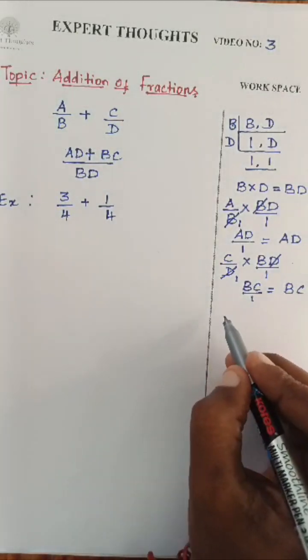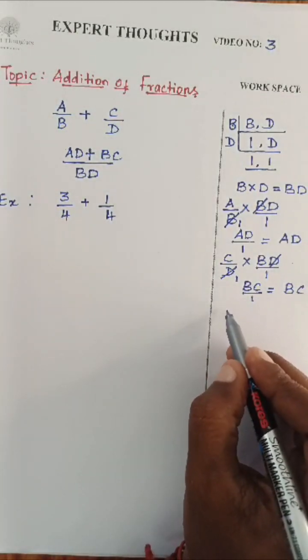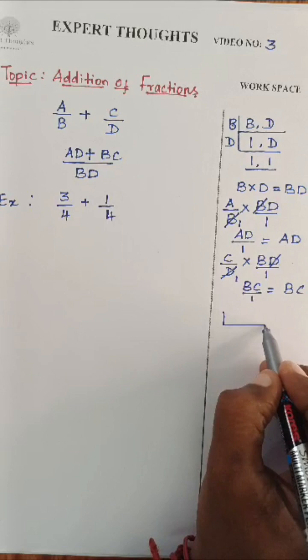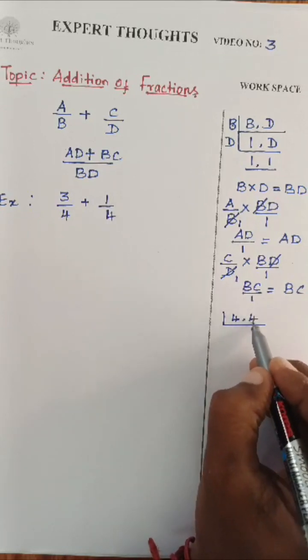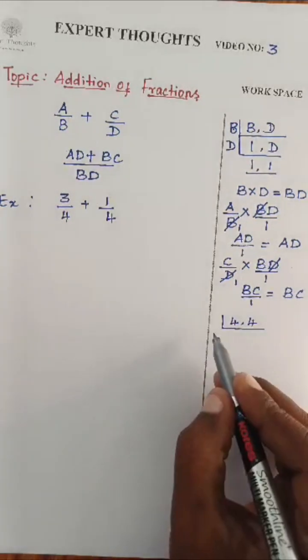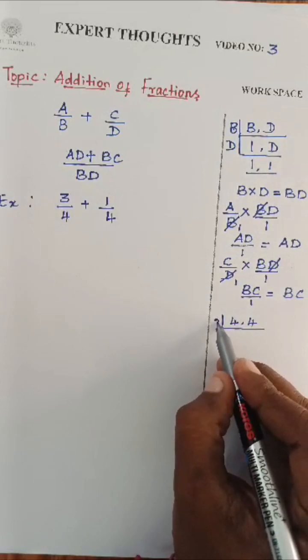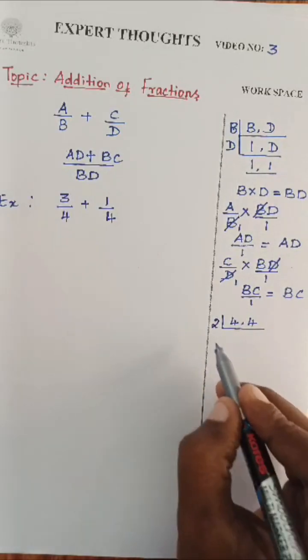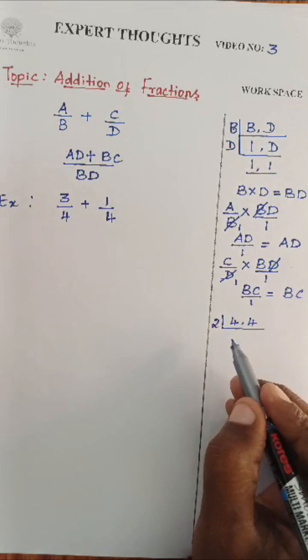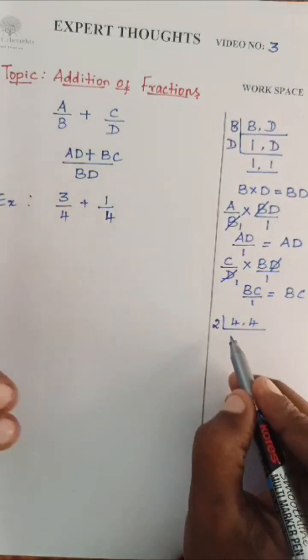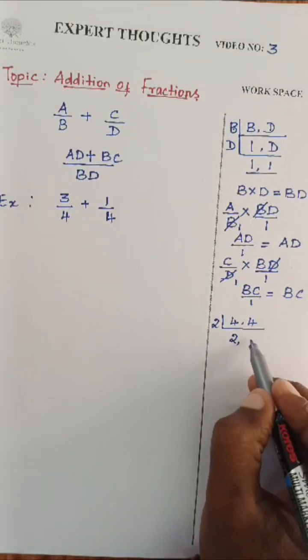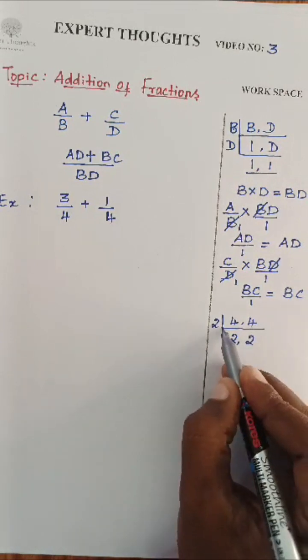Now, I will take the denominator part, which is nothing but 4, 4. I will not take 4 here. I will take 2 here because 2 and 4 can be multiplied like 2 into 2 gets 4. 2 into 2 gets 4.